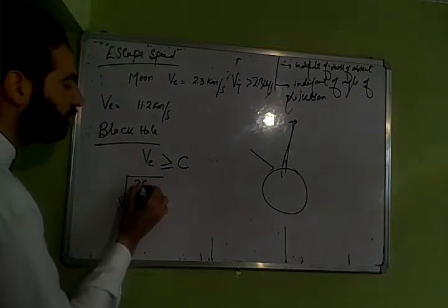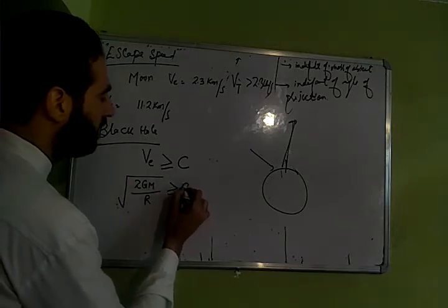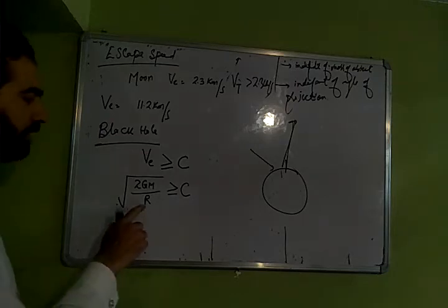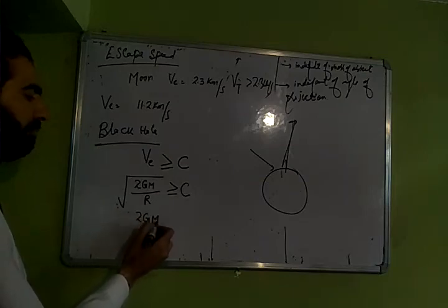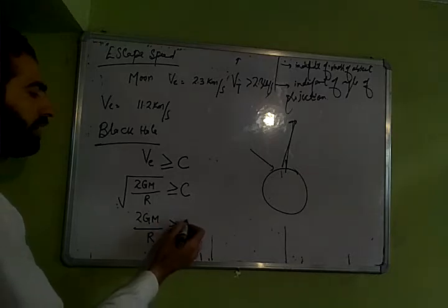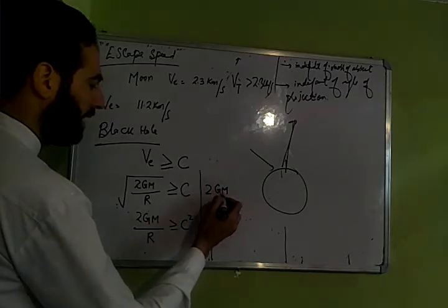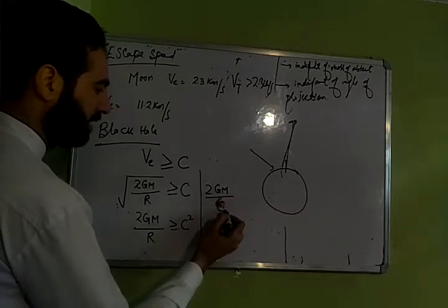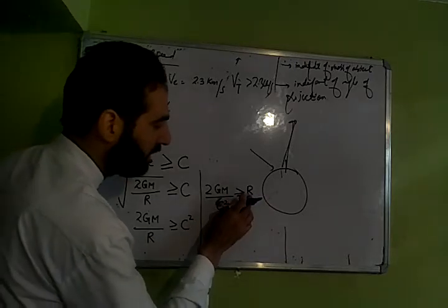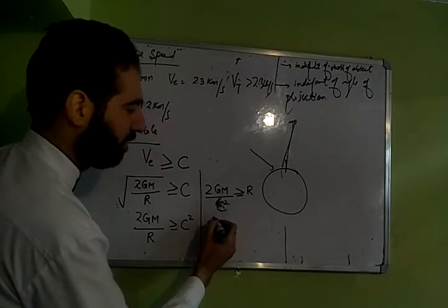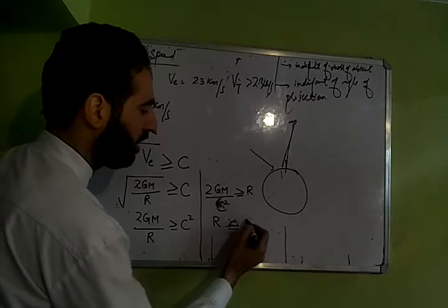Tell me escape speed ki formula kya hai? Root of 2 gm by r, yes, greater or equal to speed of light. Thik hai beta. To yahan par r bhi nikal sakta hun. I will square it on both sides. Kya aayega? 2 gm by r greater or equal to c square. R ko wahan le jao, c square ko yahan lao. 2 gm by c square is greater or equal to r.